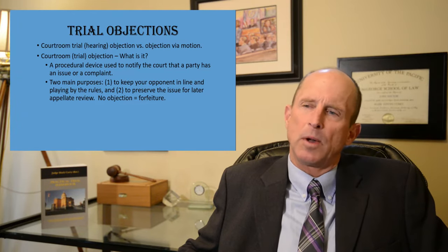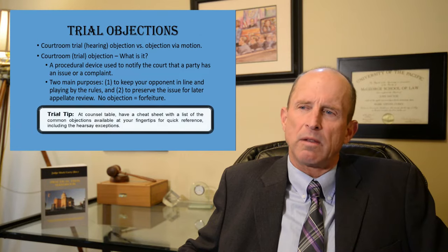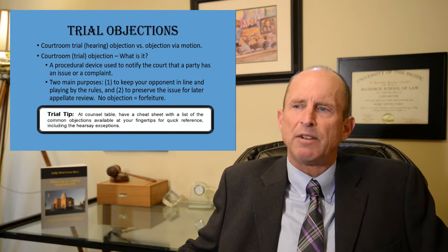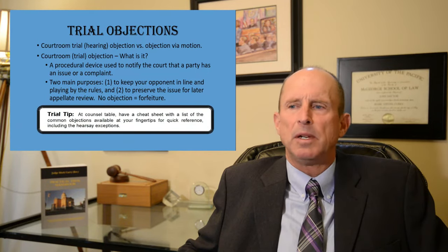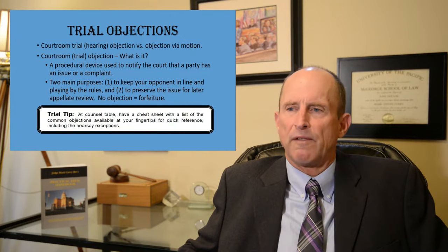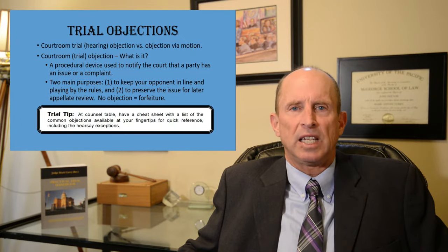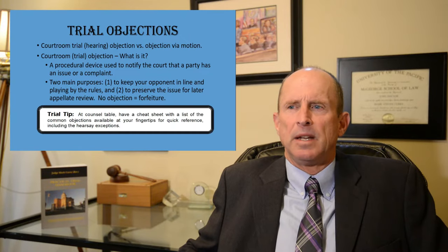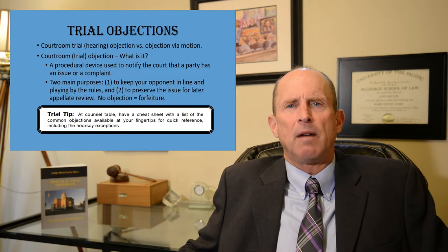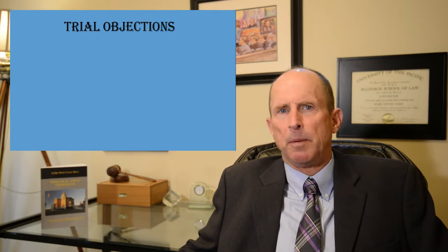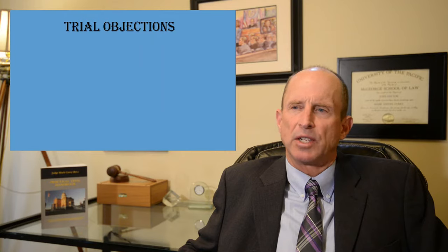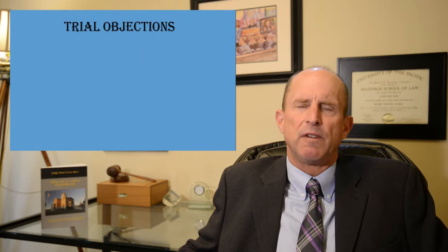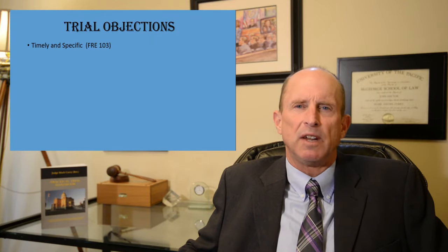Here's a trial tip to start with: at counsel table, have a cheat sheet with a list of the common objections available at your fingertip for quick reference, including the hearsay exceptions. Now let's talk about the procedures of a trial objection. First of all, they must be timely and specific.